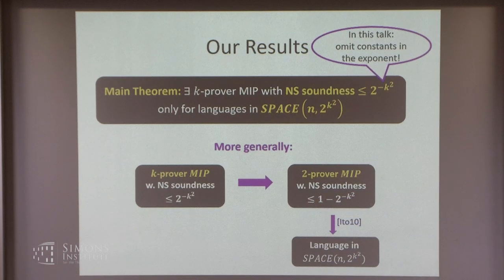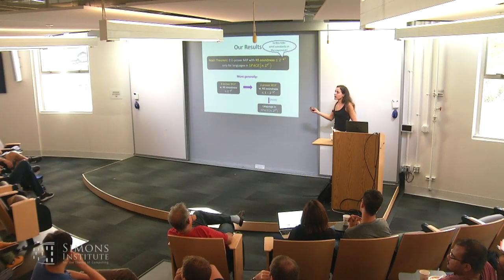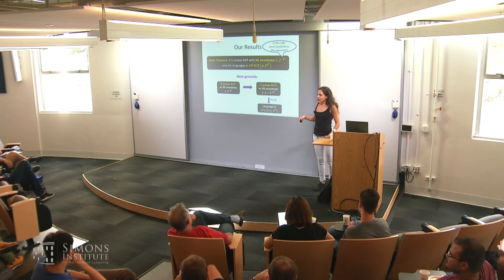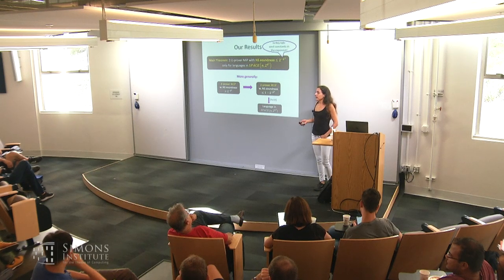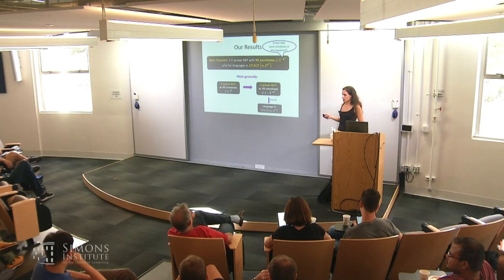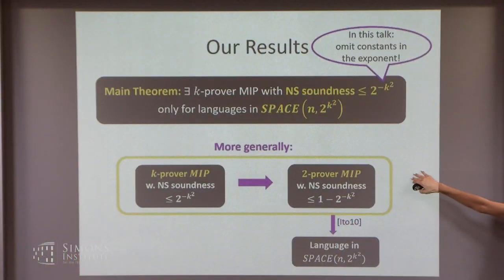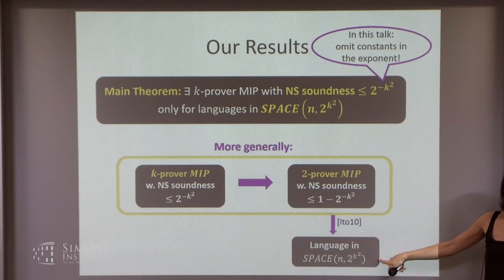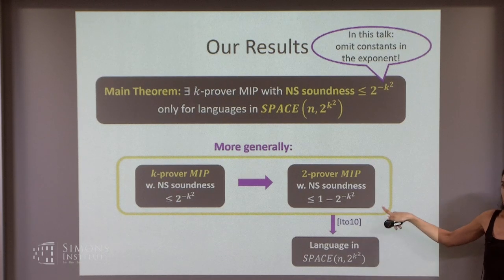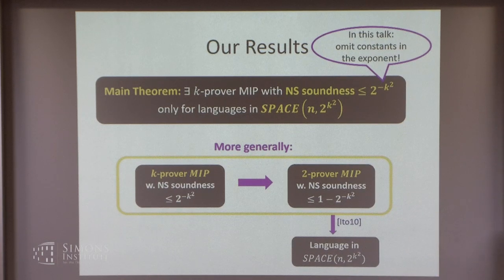A more refined version of Ito's theorem says that such a 2-prover MIP is in space 2 to the k squared. So the proof reduction combined with this refined version gives us the main result. We also check: the reduction preserves completeness — the honest provers are classical, not no-signaling — and we always assume classical provers for the honest setting.